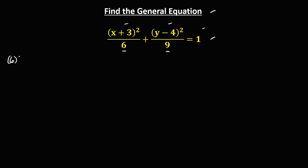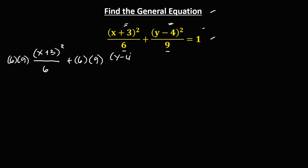This becomes 6 times 9 times, for this term, that's (x plus 3) to the power 2, then over 6, then plus, for this term, we have 6 times 9, then times (y minus 4) to the power 2, then over 9, then equals 6 times 9 times 1.